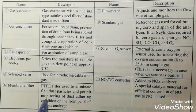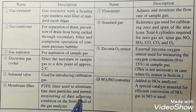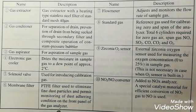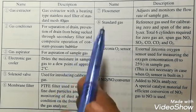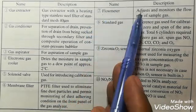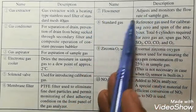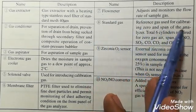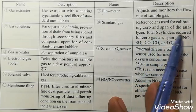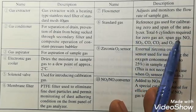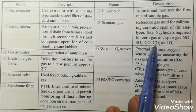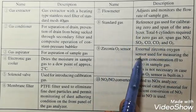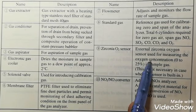PTFE filter is used to eliminate the dust particles and permit monitoring of dust adhering condition at the front panel of the gas analyzer. The flow meter adjusts and monitors the flow rate of sample gas. Standard gas reference gas is used for calibration, zero and span of the analyzer.